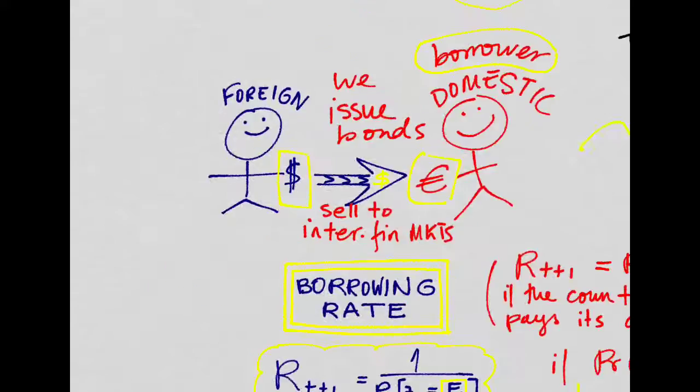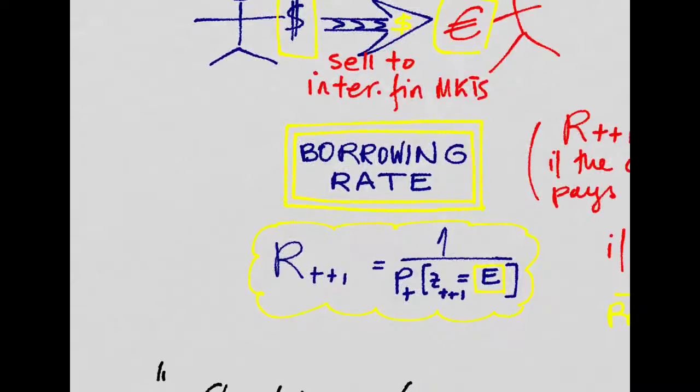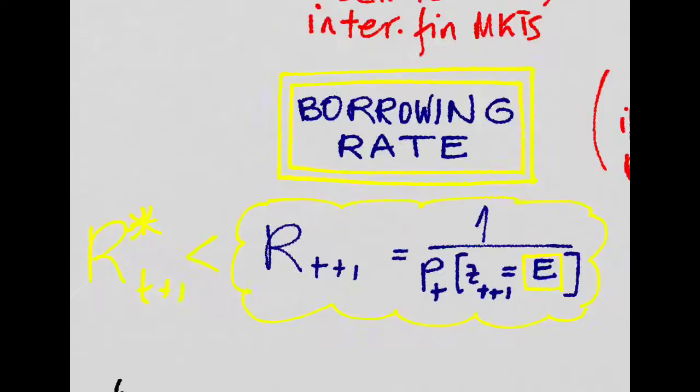But then there is the other case in which we need money. So what we can do is we can borrow from abroad. We issue some bonds and we sell them to foreigners, and that is how we finance ourselves. Now, if we borrow, it ends up happening that the rate at which we borrow is a little higher than the rate we would be getting if we lend it. So why do we have to pay more if we borrow money than what we would receive if we were lending money?